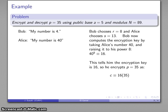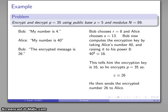And so this tells him what the encryption key is, and so he can encrypt p equals 35. Again, this is essentially an affine cipher. 16 times 35, reduced mod 89, gives him the encrypted value, 26. So Bob says the encrypted message is 26.